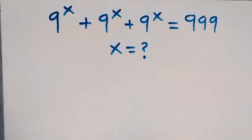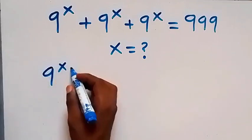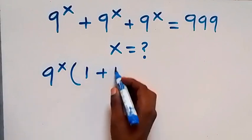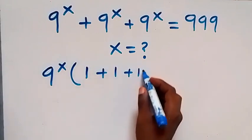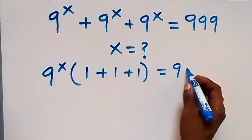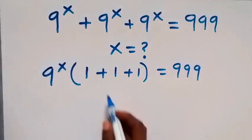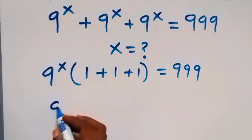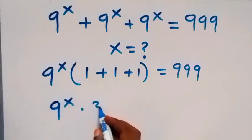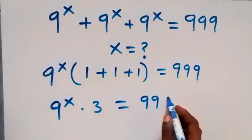From here, let's factor 9 to the power x. Then we have 9 to the power x times 1 plus 1 plus 1, which equals 999. So we can write this as 9 raised to the power x times 3 equals 999.